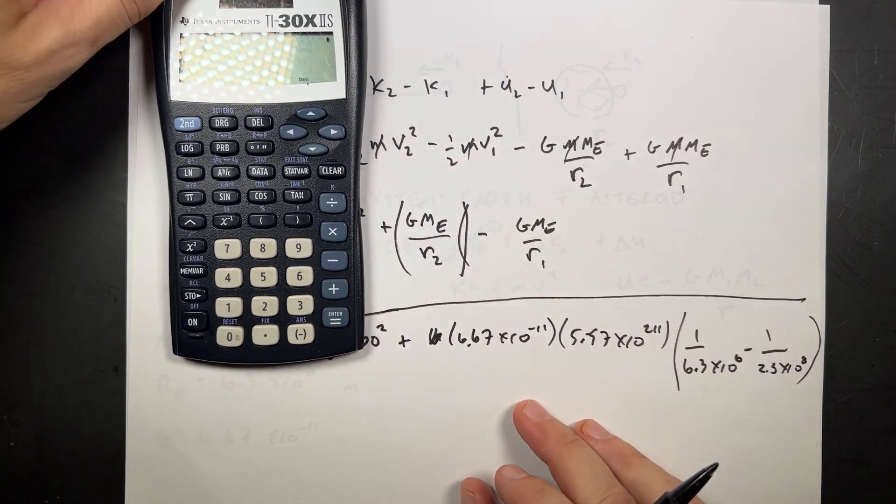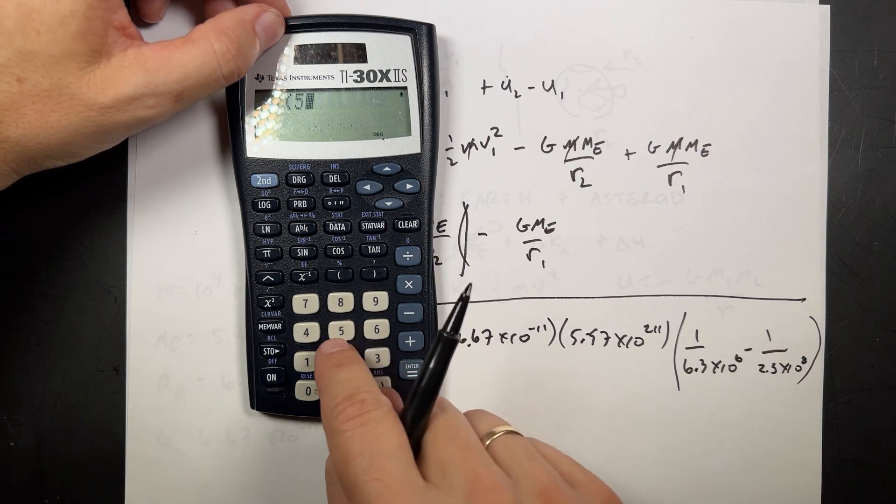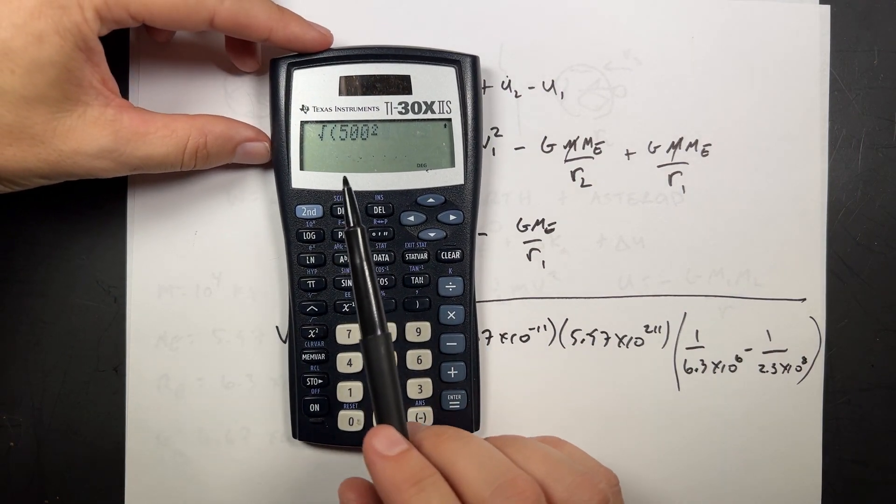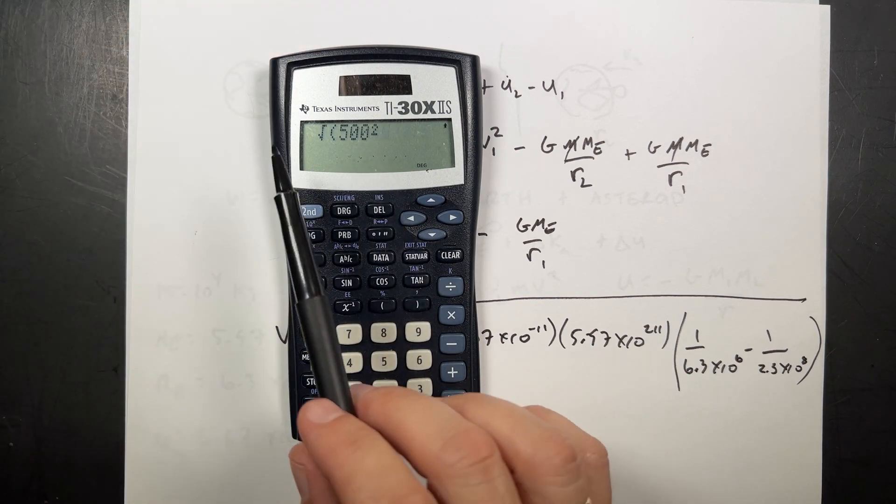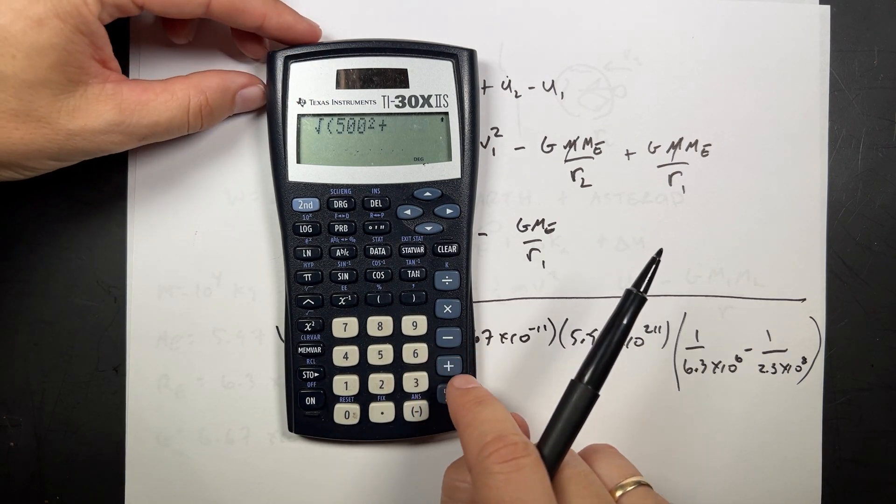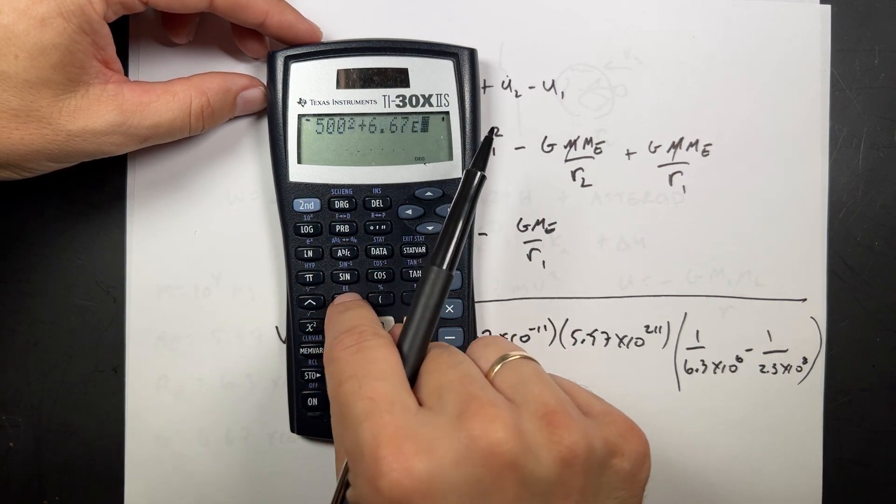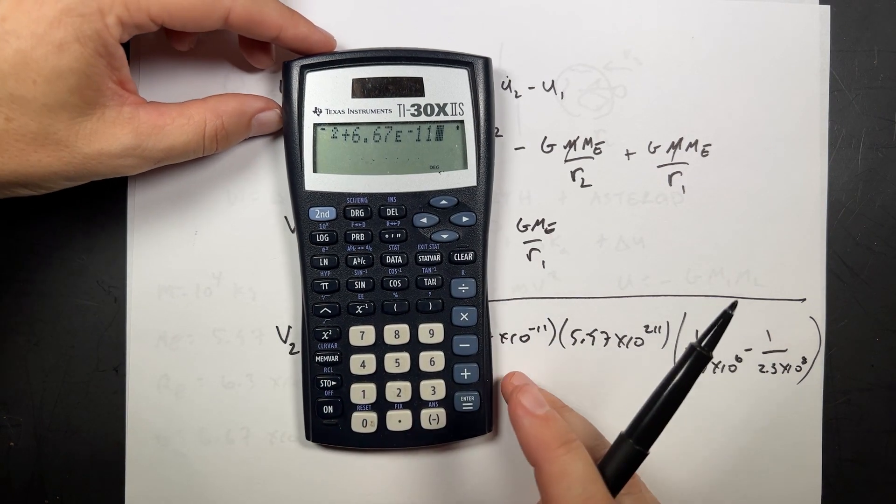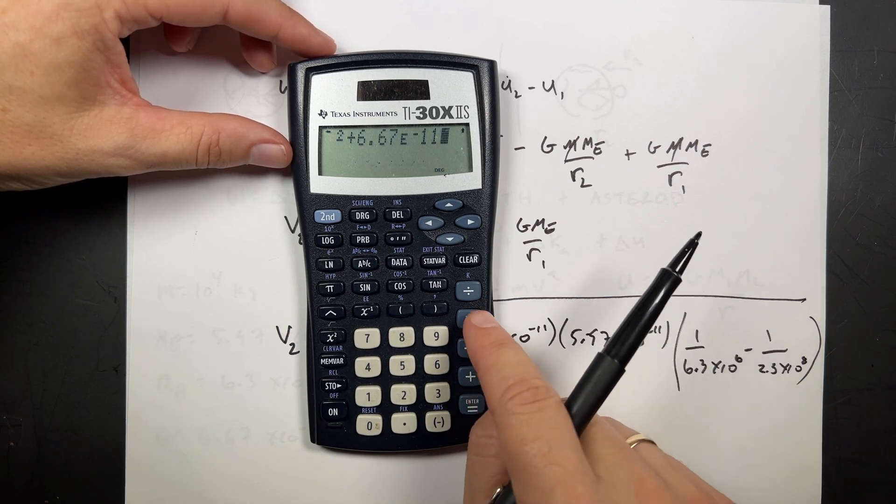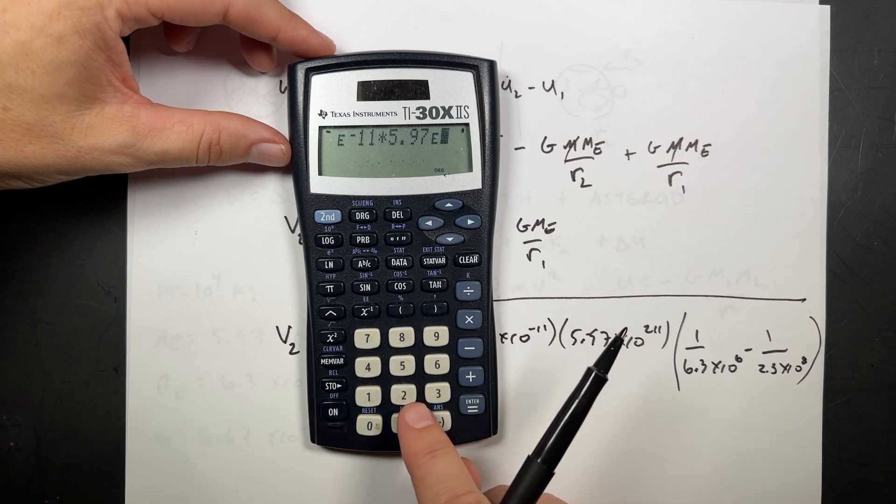Square root. 500 squared. If you enter 500 and then just use the squared, it treats that as one number. So you don't have to put parentheses around that. And then I'm going to say plus 6.67 times 10 to the negative 11th. Again, it's using scientific notation. That's one number. I don't need to put parentheses. Times 5.97 times 10 to the 24th.